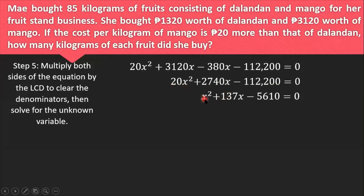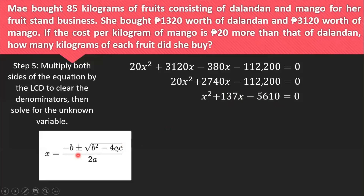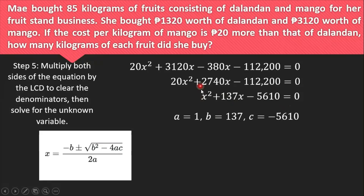To factor this trinomial, it is difficult to find multiples of 5,610 that sum to 137, so we use the quadratic formula. With A = 1, B = 137, and C = negative 5,610, we substitute into the formula: x = (negative 137 ± √(137² minus 4·1·(negative 5,610))) all over 2·1. Operating under the square root gives 41,209, and the square root of 41,209 is 203.